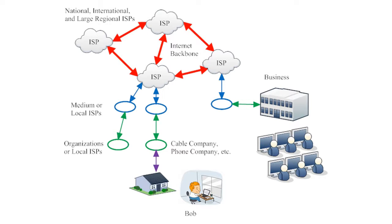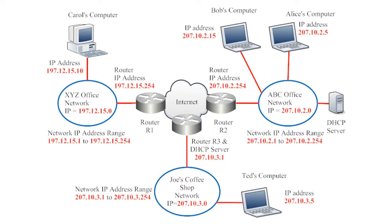So there it is. This illustration shows us how internet service providers are organized into a hierarchy, with the ISPs on the top handling the most data and the ISPs and residents on the bottom handling the least data. This next illustration shows something else: every device connected to the internet has a unique address called an IP address.